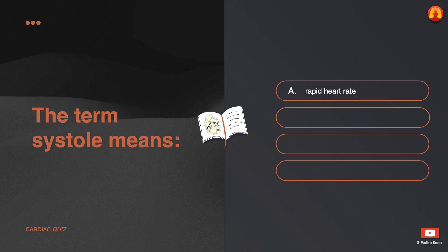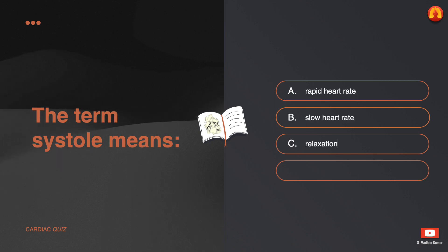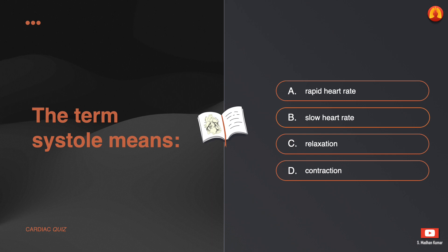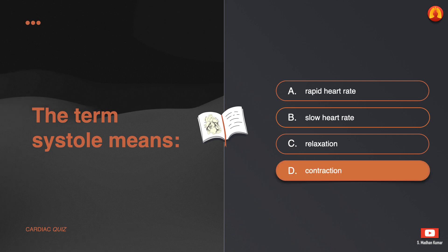The term systole means: A. Rapid heart rate. B. Slow heart rate. C. Relaxation. D. Contraction. The correct answer is: contraction.